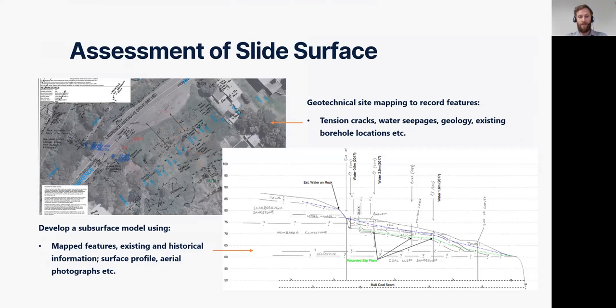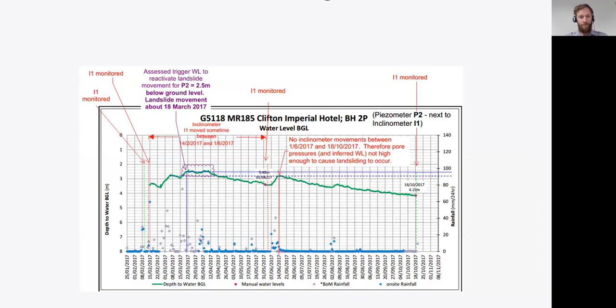Using the information obtained from the geotechnical mapping, we then started to develop a subsurface model for the project. This section here is one of the critical sections, which I'll show on the next slide, detailed in Slope W, that we identified on site.